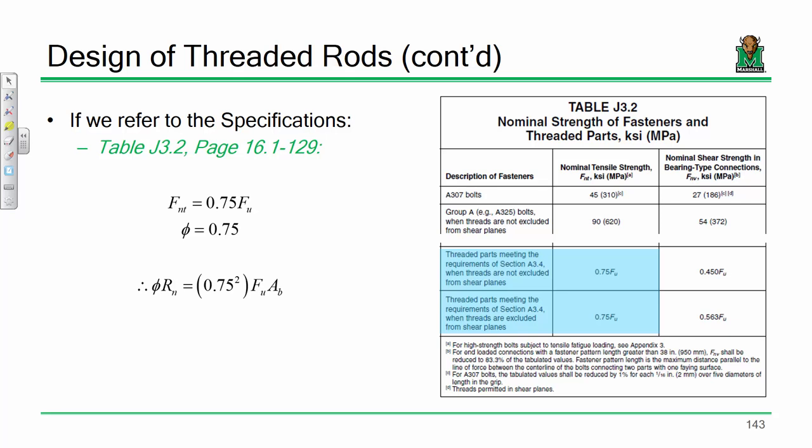What about FnT? Chapter J of the spec tells us the nominal tensile strength. It's essentially a bolt table covering Group A, B, and C bolts. For any other threaded part — which is what we're dealing with — FnT = 0.75 Fu. So what we have is 0.75 × 0.75 Fu × Ab.